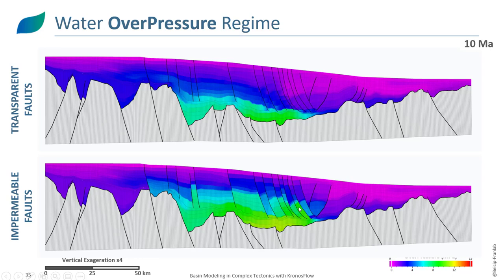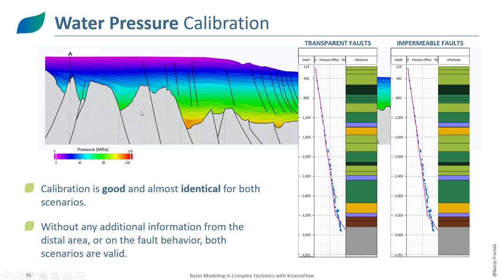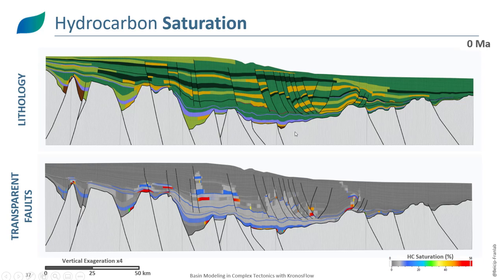The evolution of overpressure in the two cases shows a strong compartmentalization occurring until present day. We have two scenarios describing what could happen when drilling: a worst-case scenario with strong overpressure and a best-case scenario with lower overpressure. We have only one well for calibration located on the platform, which is not affected by the faults, so calibration is similar in both cases. Both scenarios are considered valid and equiprobable.